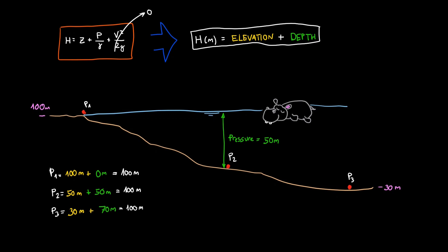In this case, it is easy to see that the distance between the terrain and the water surface is the pressure. For point 2, it is 50 meters.